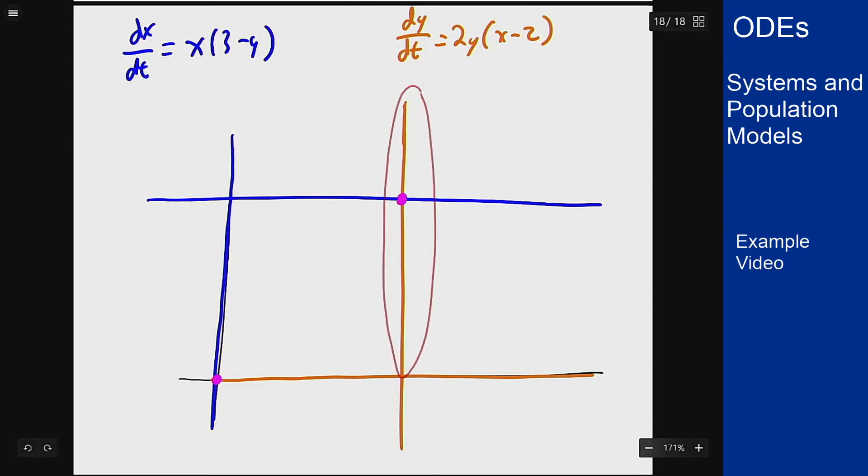If x equals 2, we are along this line. So in that case, we know dy is 0. So our trajectory is directly horizontal.